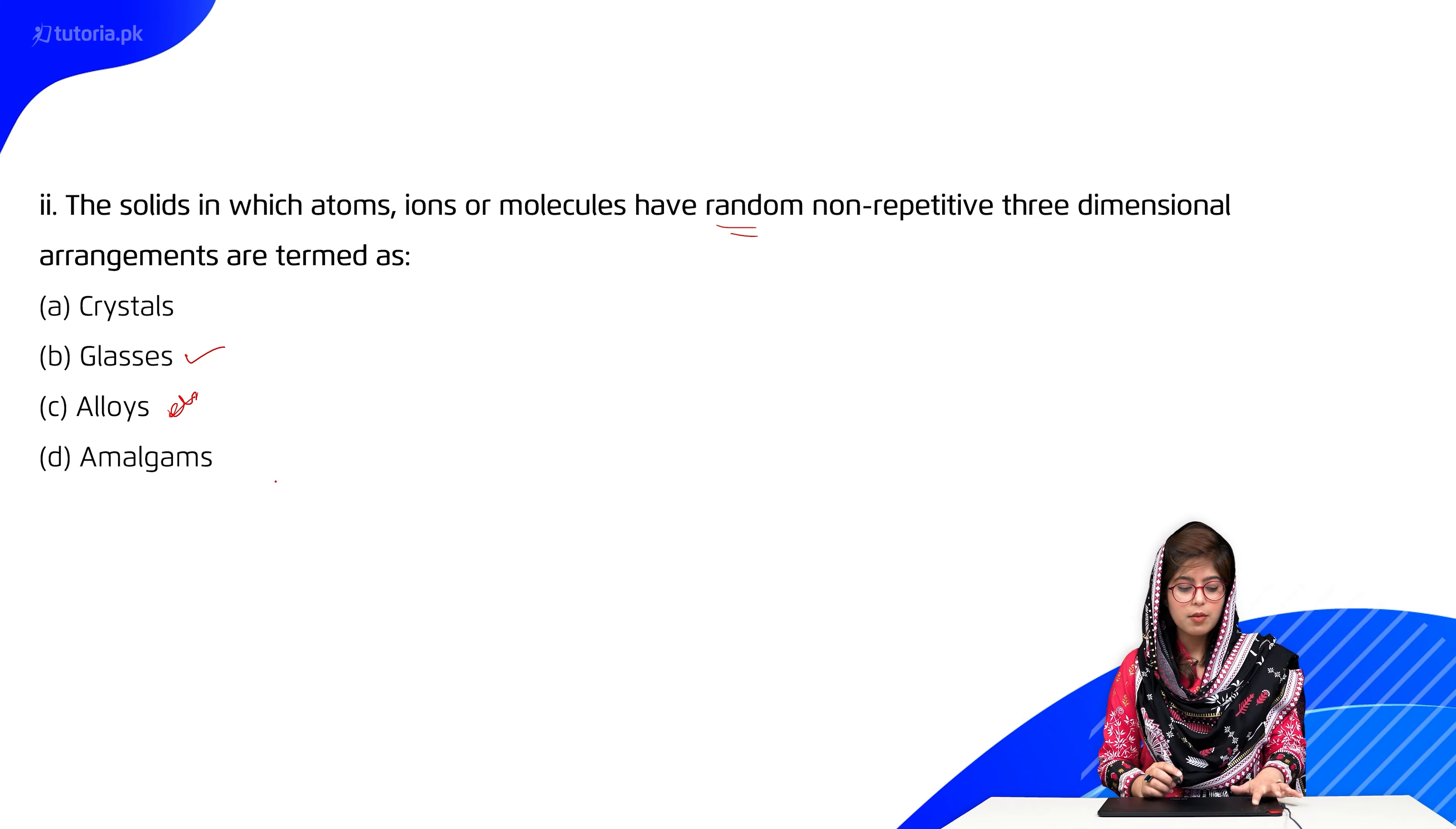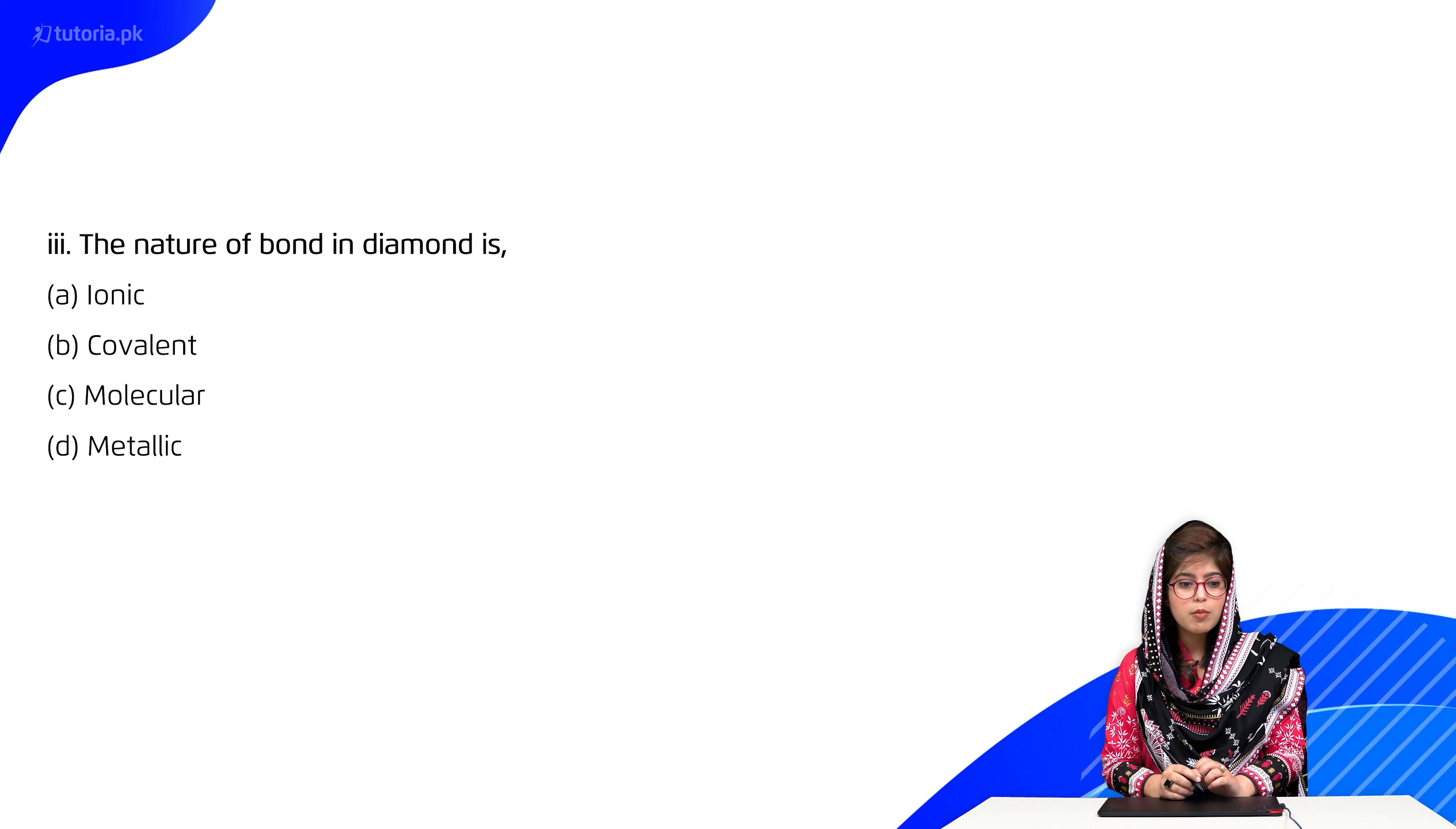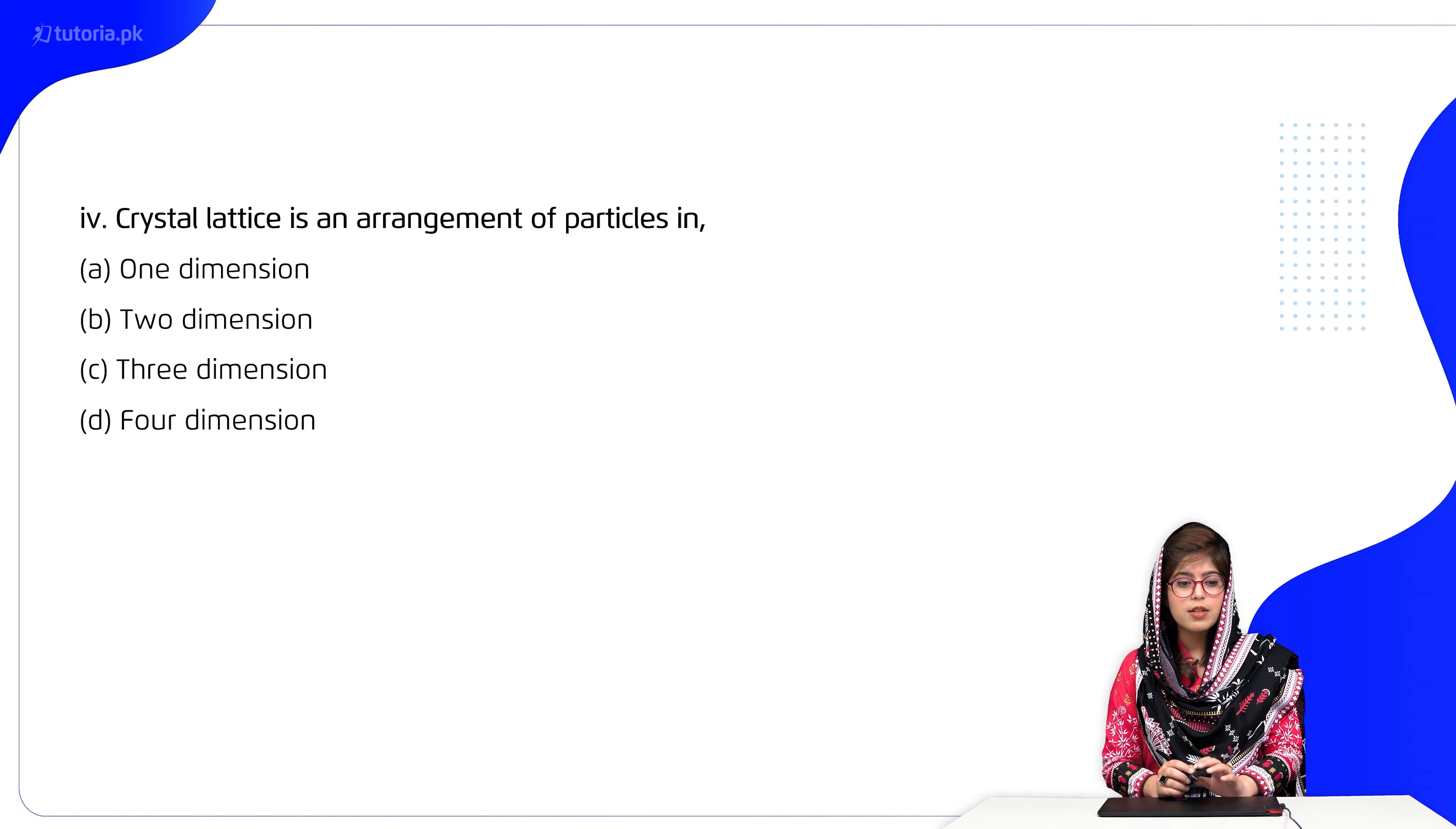Number three: The nature of bond in diamond is: A) ionic, B) covalent, C) molecular, D) metallic. It's B, covalent. Covalent bond exist kerte hain diamond ke andar.